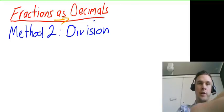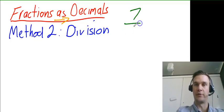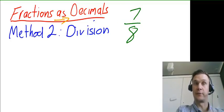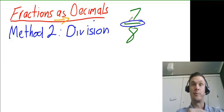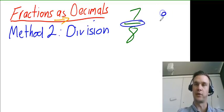So let's use an example here: if we have 7 over 8. Now effectively this symbol here, the line in between the two in the fraction, that simply just means division. So it sort of looks like a division symbol.